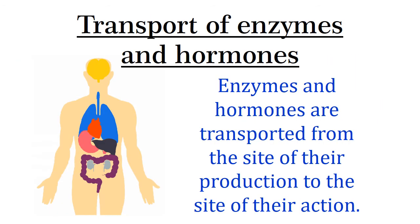The fourth function is transport of enzymes and hormones. Enzymes are biological catalysts — a catalyst enables chemical reactions at faster rates. Blood transports enzymes and hormones from the site of their production to the site of their action.